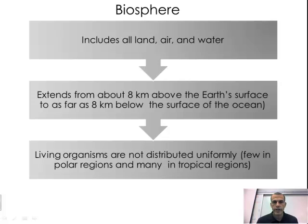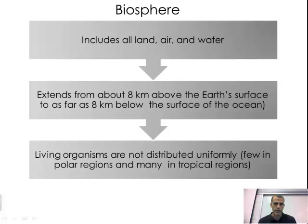Now returning — after you have a better idea of what they refer to as the biosphere, or the ecosphere, and the living factors within the biosphere — let's go ahead and define what the biosphere consists of. It includes all land, air, and water. It extends from about 8 kilometers above the earth's surface to about 8 kilometers below the earth's surface. Living organisms are not distributed uniformly — for example, in polar regions there are few organisms, whereas in tropical regions there are a lot. Certain areas are going to have more organisms than others.